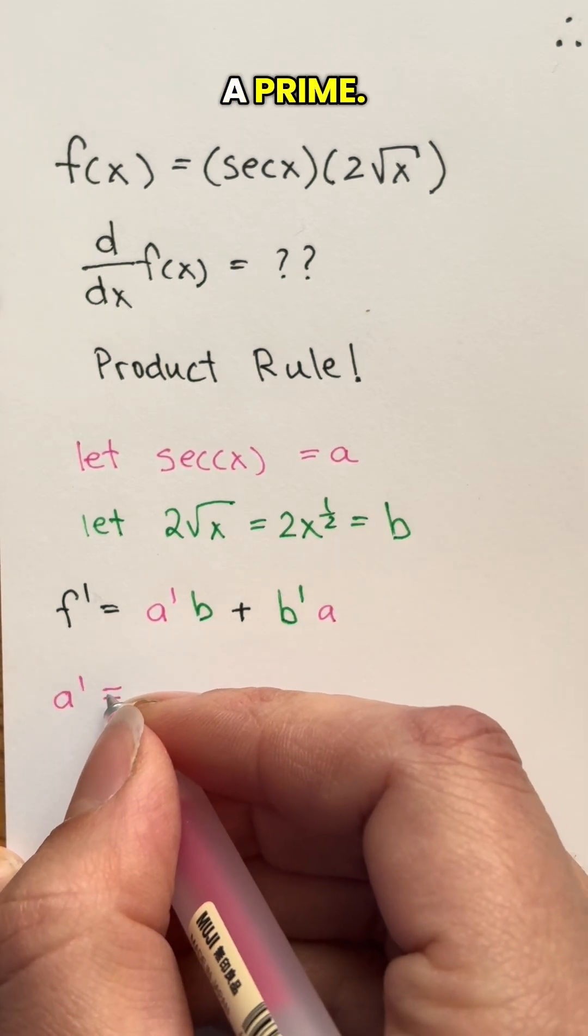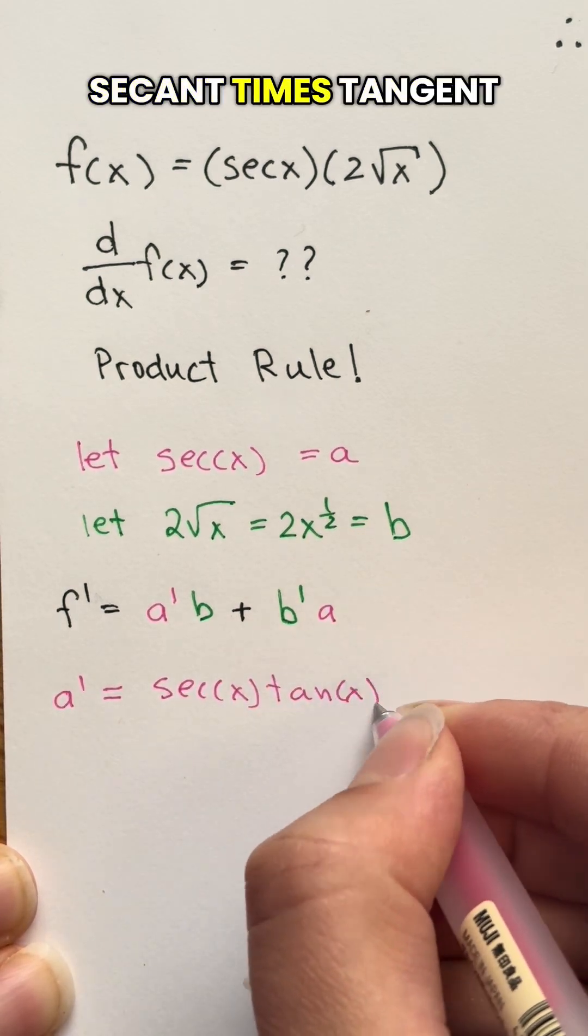Let's start by looking for a prime. The derivative of secant is secant times tangent.